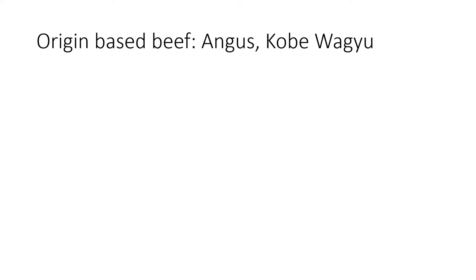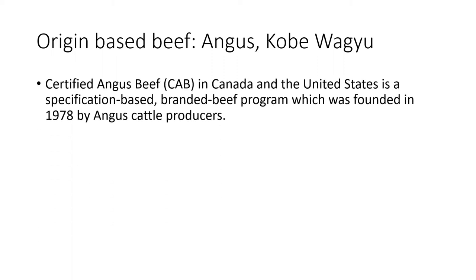Origin-based beef. Knowing a little about animals known best for their produce is useful. We talk about Angus, Kobe, and Wagyu. Certified Angus beef exists in Canada and the United States — it is a specification-based brand beef program founded in 1978 by Angus cattle producers, with norms about regional conditions and feed.